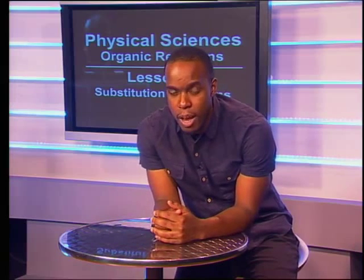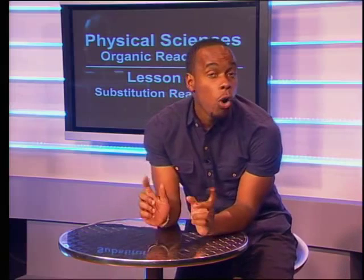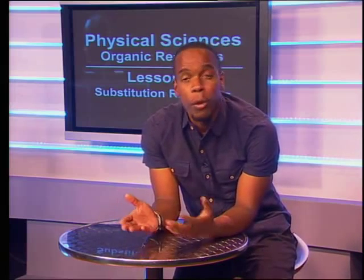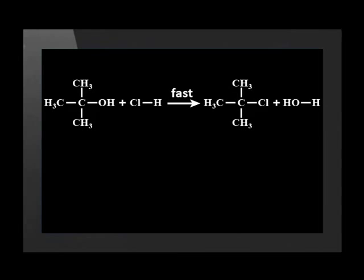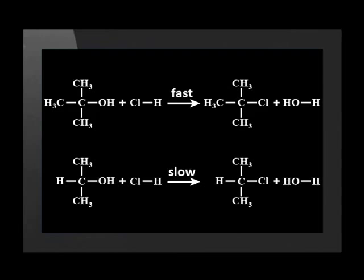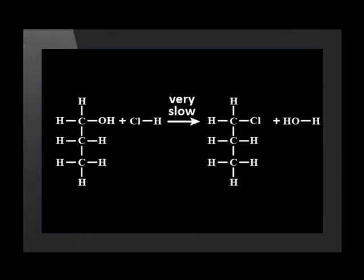Can we go the other way? Again, the answer is yes. The hydroxyl, or OH, on an alcohol can be swapped for a halogen. For the reaction to go backwards, we need to add very concentrated hydrogen chloride or hydrogen bromide. This forms a tertiary alcohol — that means a carbon atom is attached to three other carbon atoms. The reaction is much faster with the tertiary alcohol. When the reaction occurs with the secondary alcohol or with the primary alcohol, the reaction is much slower.